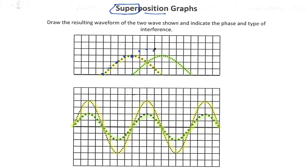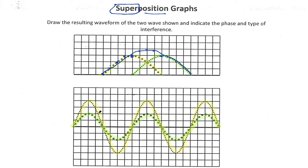Continuing on: one plus two and three-quarters gives me three and three-quarters. This next portion, I've got three units above and zero units above the equilibrium, so three plus zero gives me three. And for the rest of this wave pattern, there are no more waves interacting, so the green wave will be seen — or heard, if it was a sound wave — as is. Tracing my overall resulting wave pattern would look something like that. This would be considered constructive interference, because these waves are building up on top of one another. This first example is all constructive interference.